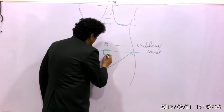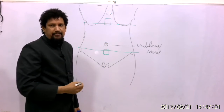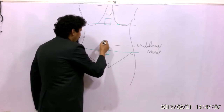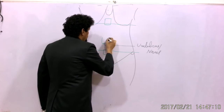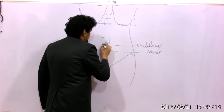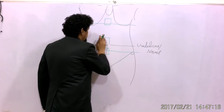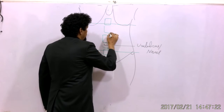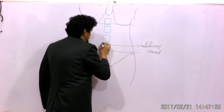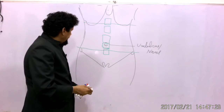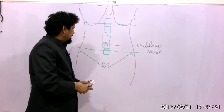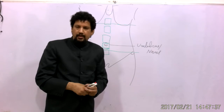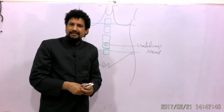The level of the navel or umbilicus corresponds to the junction between the L3 and L4 vertebrae.